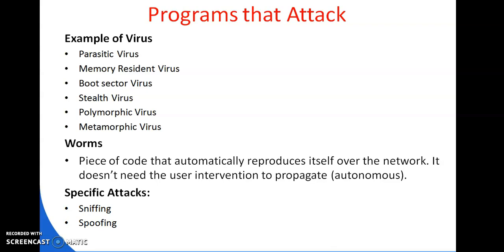A Trojan horse is a hidden piece of code like a virus. However, the purpose of a Trojan horse is different. While the main purpose of a virus is to make some sort of modification to the target computer or network, a Trojan horse attempts to reveal confidential information to an attacker. The name comes from the epic poem. Its objective is to access and provide confidential information to the attacker.